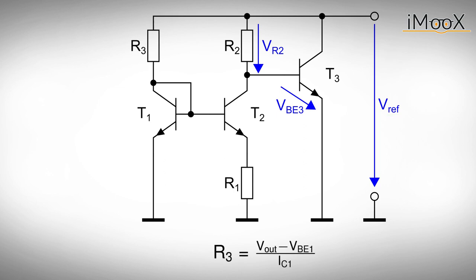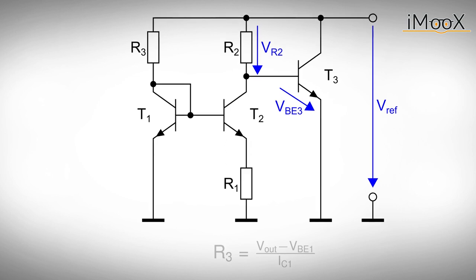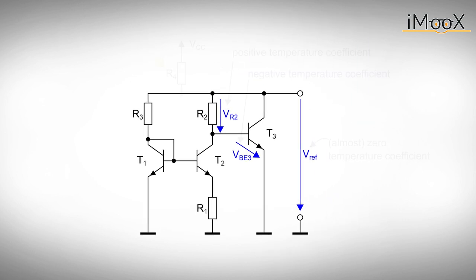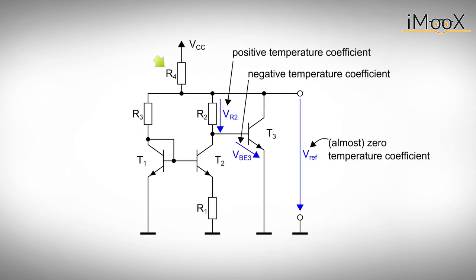But our circuit still needs to be supplied. To keep things simple, we use resistor R4 connected between the supply and our voltage reference. The circuits are called bandgaps because for zero temperature coefficient the output voltage is about 1.2 volts, which is close to the silicon bandgap voltage at zero Kelvin.